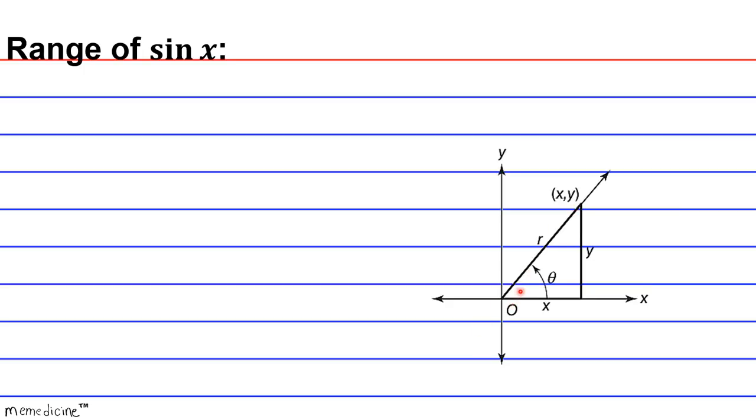So our reference angle theta has a sine value of y over r, basically the y coordinate, the value of the coordinate, divided by the magnitude of the distance of this hypotenuse, or the longest side, or the ray. There are various names for the longest side of the triangle, opposite the right angle in a right triangle. So this is what the sine of theta is.